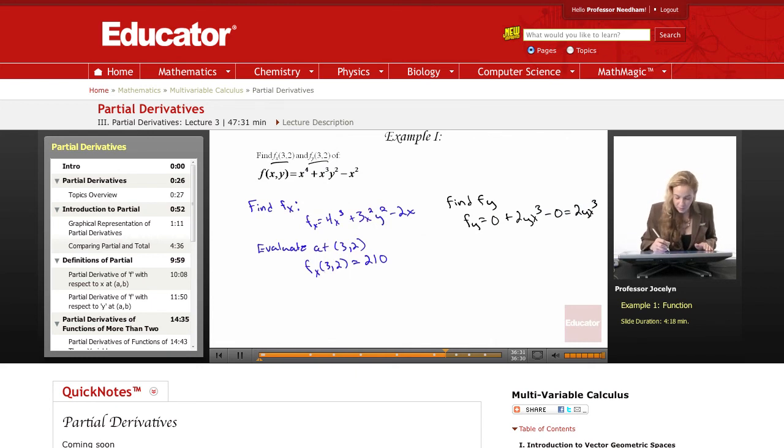And then if we evaluate this at (3, 2), we plug in 3 for x, 2 for y. We get f of y evaluated at (3, 2) is equal to, yeah, this one's really easy.